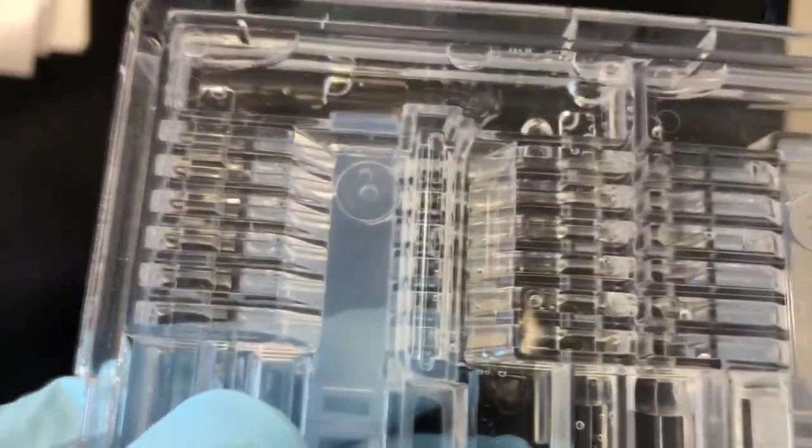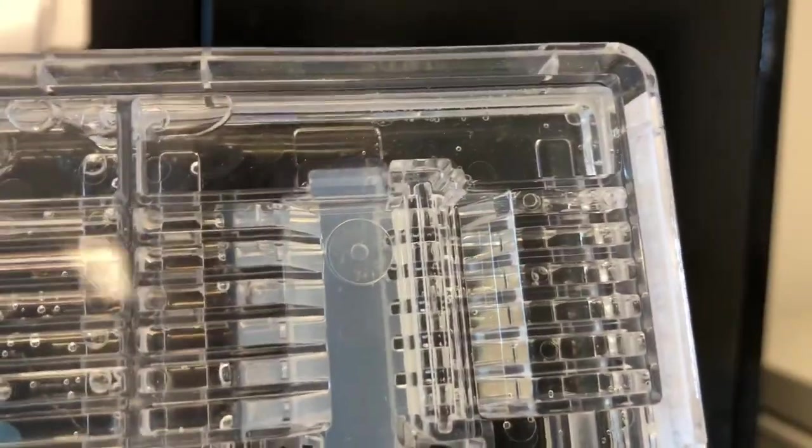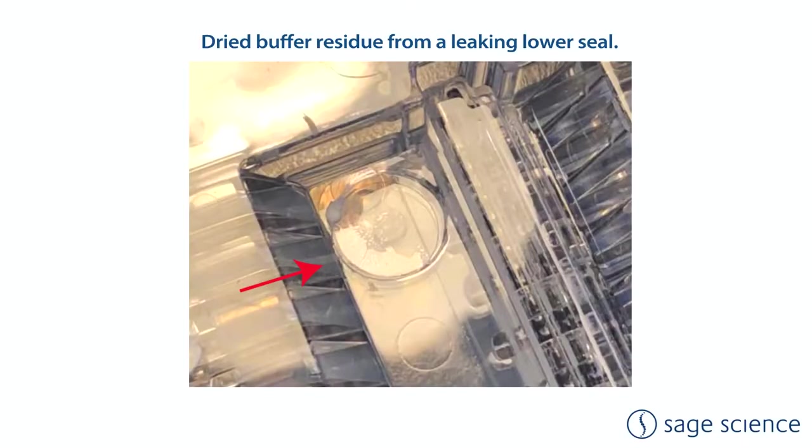If there is a small bubble under the seal, that is okay. Look for obvious leakage and dried buffer residue. Here is an example. If they have been leaking or if there is a large amount of leaked buffer, contact customer support for a replacement.